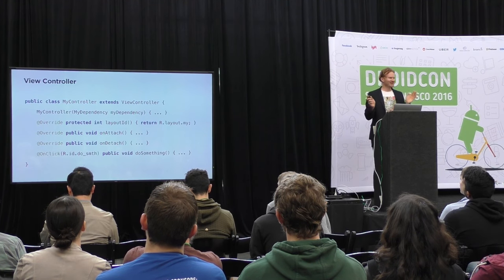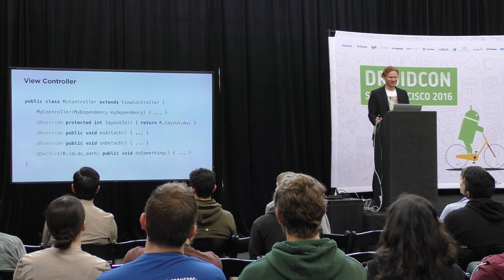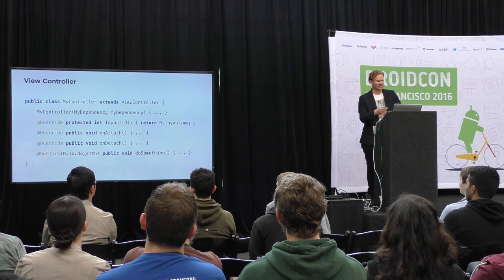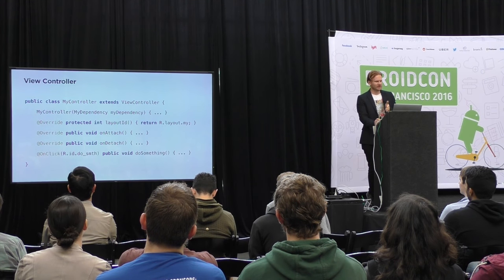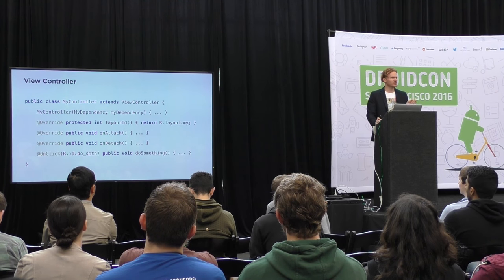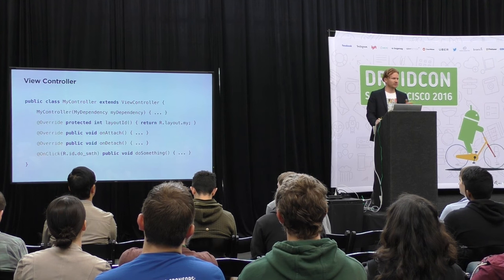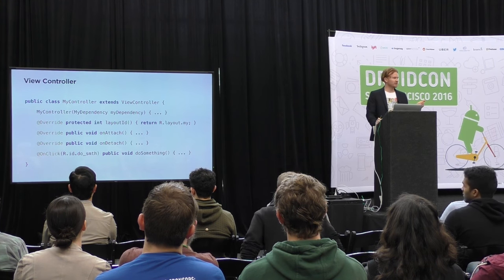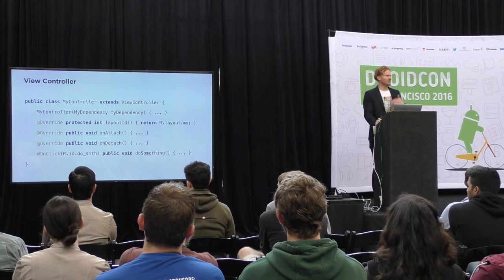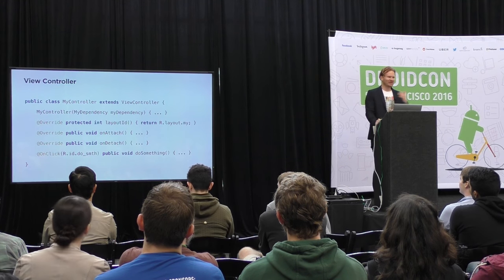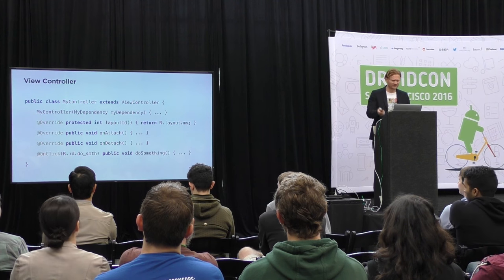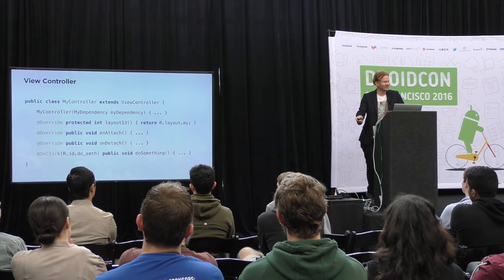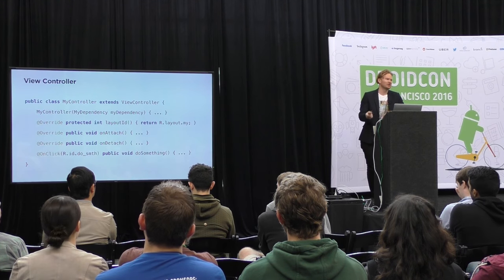I actually lied a little bit — we're not using plain Android views. We used them originally, but then we introduced a special object called view controller, which is directly coupled with the view lifecycle but provides some workarounds for issues I'll discuss. A typical view controller allows you to specify which layout needs to be rendered, has two lifecycle methods — attach and detach — and also automatically binds sub-views through Butter Knife so you don't even need to call Butter Knife bind. All you need is to start declaring your injection and click bindings. If you don't use Butter Knife, you just use the get-view method to access sub-views.